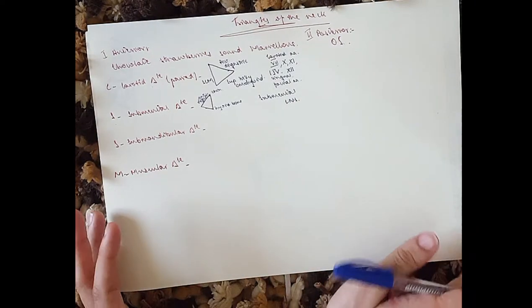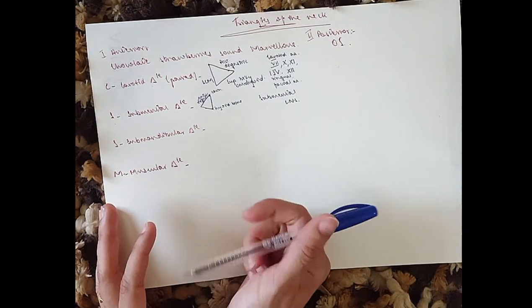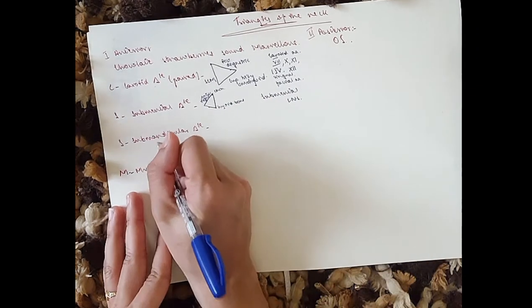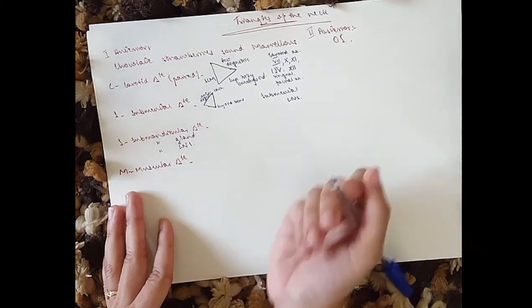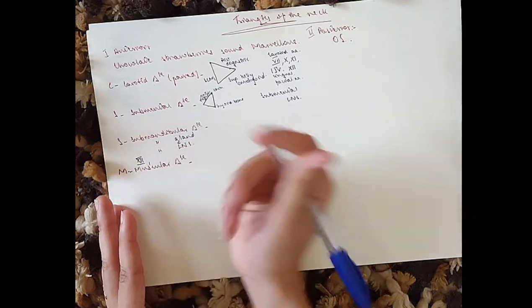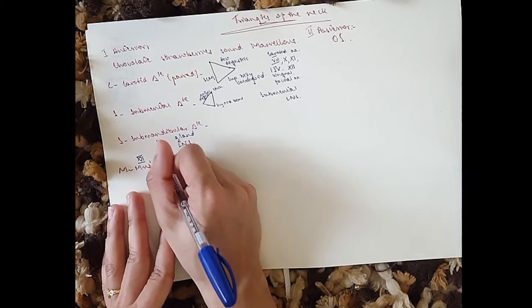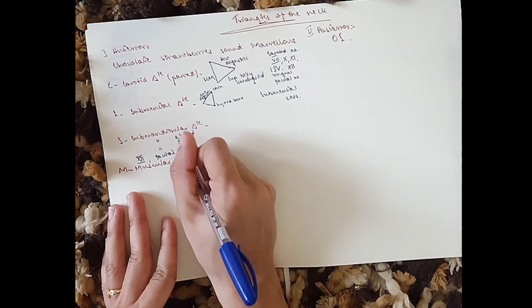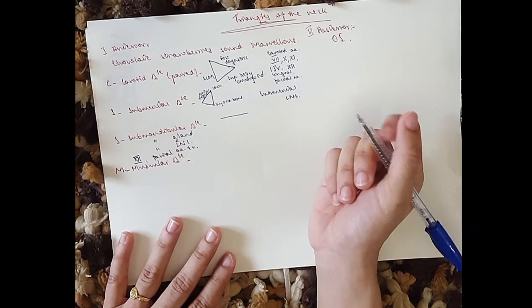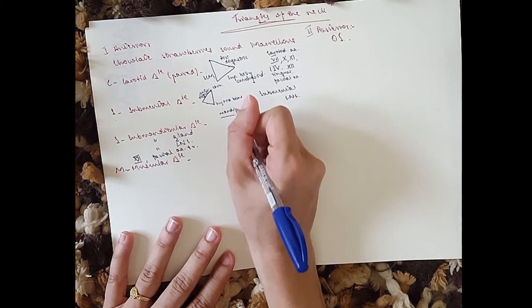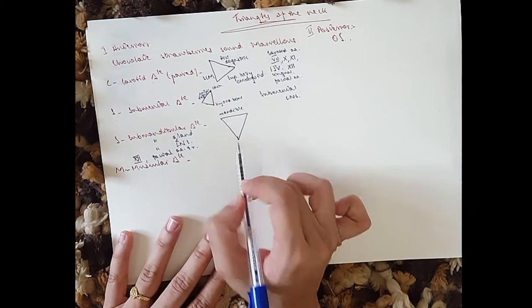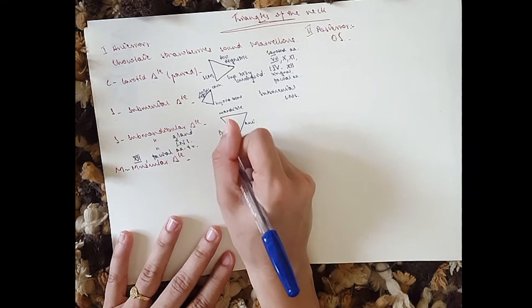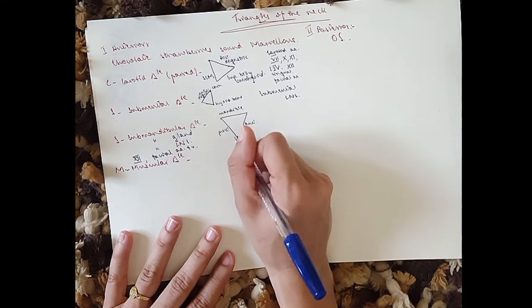Then we move on to the submandibular triangle. From the name, you know that it's below the mandible. For contents, obviously, you've got the submandibular gland, the submandibular lymph nodes, and you've got the hypoglossal nerve, the mylohyoid nerve, and the facial artery. For borders, we've got the mandible as the base, and then the digastric muscle forms the apex — so you've got the anterior and posterior bellies of the digastric.